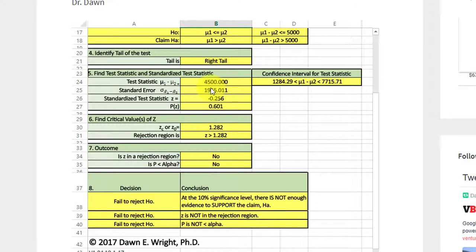Our test statistic is 4,500, which is just the difference in the two means. The standardized test statistic is minus 0.256. Our p-value of obtaining that or more extreme value is 0.6, which tells us that the test is not significant. We would fail to reject the null and therefore the claim is not supported. The calculator gives us our critical value 1.282. It tells us the rejection region is to the right of 1.282. This test statistic doesn't fall in that region.